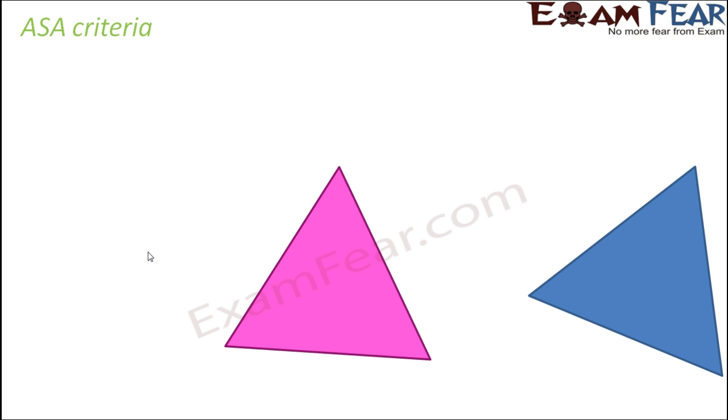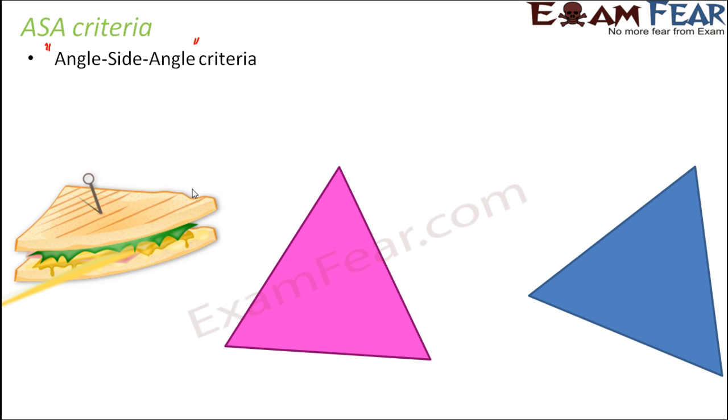So let us now look at ASA criteria. Now I really do not think that I need to explain a lot here. ASA means angle side angle. That means here we will deal with two angles and one side. And this is also the same sandwich phenomenon. But this time the two slices of breads are two angles and the stuffing is the side.